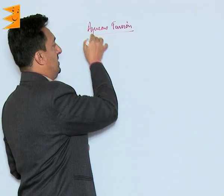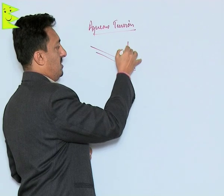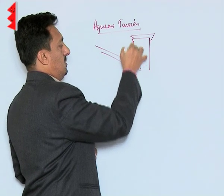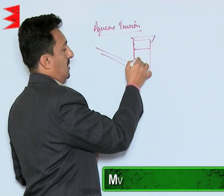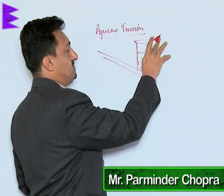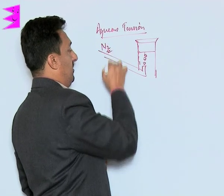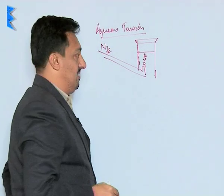Aqueous tension: whenever we collect any gas by downward displacement of water, it gets collected in bubbles. For example, we are preparing nitrogen in the lab and collecting it by downward displacement of water.